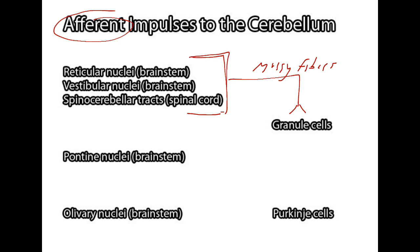The reticular nuclei, the vestibular nuclei, and the spinal cerebellar tracts send their information to the same side of the cerebellum that they originate from. Whereas the pontine nuclei also connect via mossy fibers to granule cells, but they do so by crossing over to the opposite side of the cerebellum.